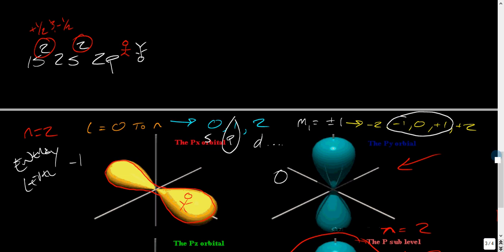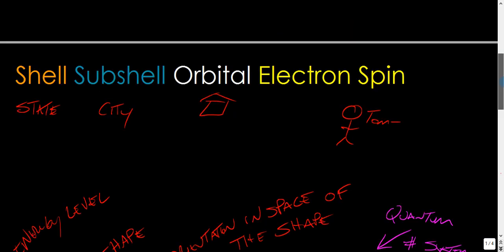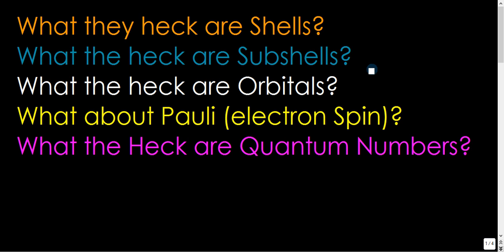So that's basically what the heck are shells, what the heck are subshells, what the heck are orbitals, the Pauli exclusion principle, and quantum numbers. I hope to help out, guys.